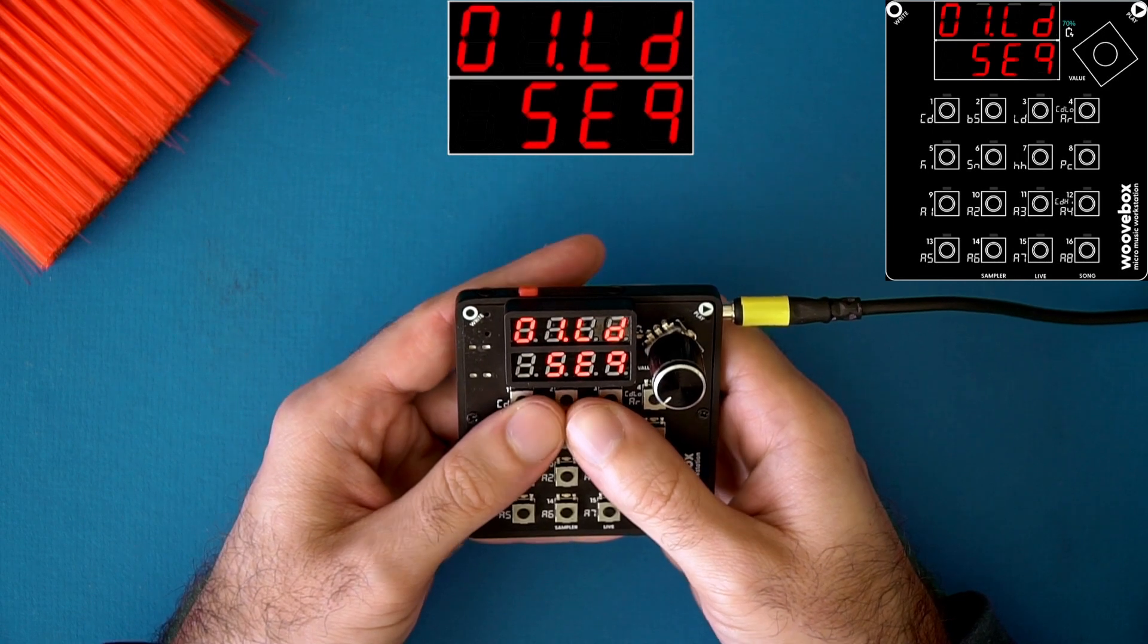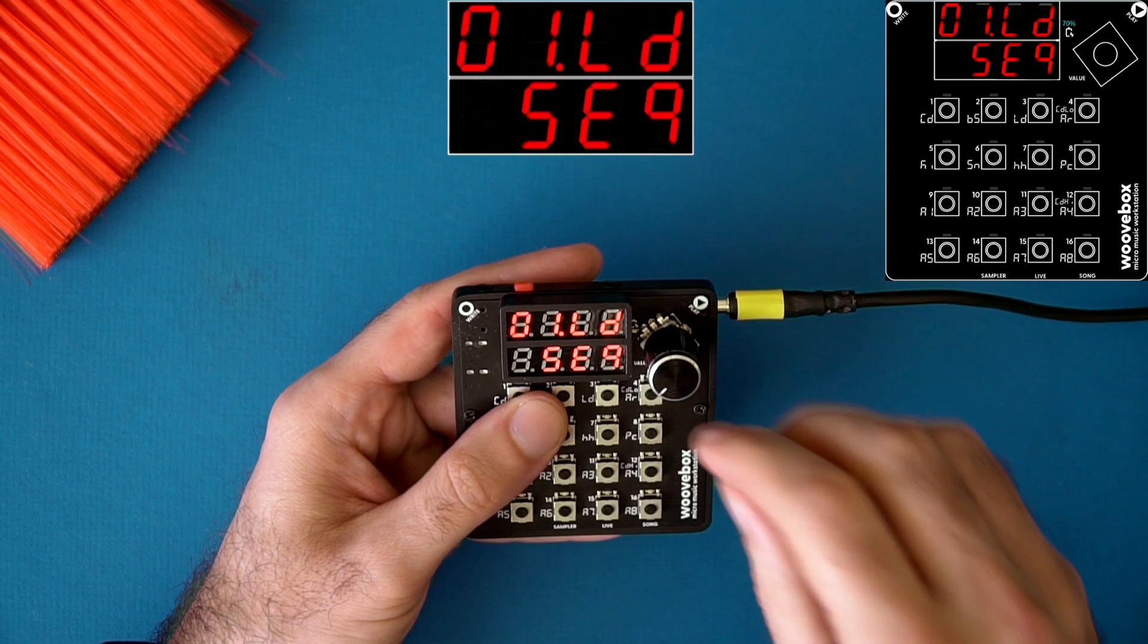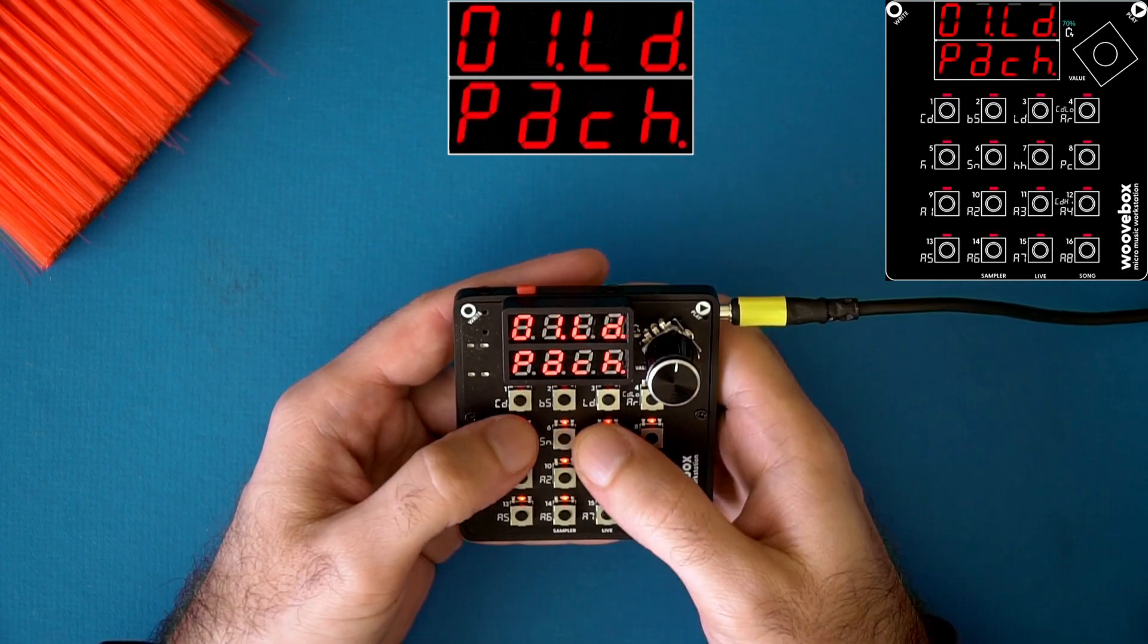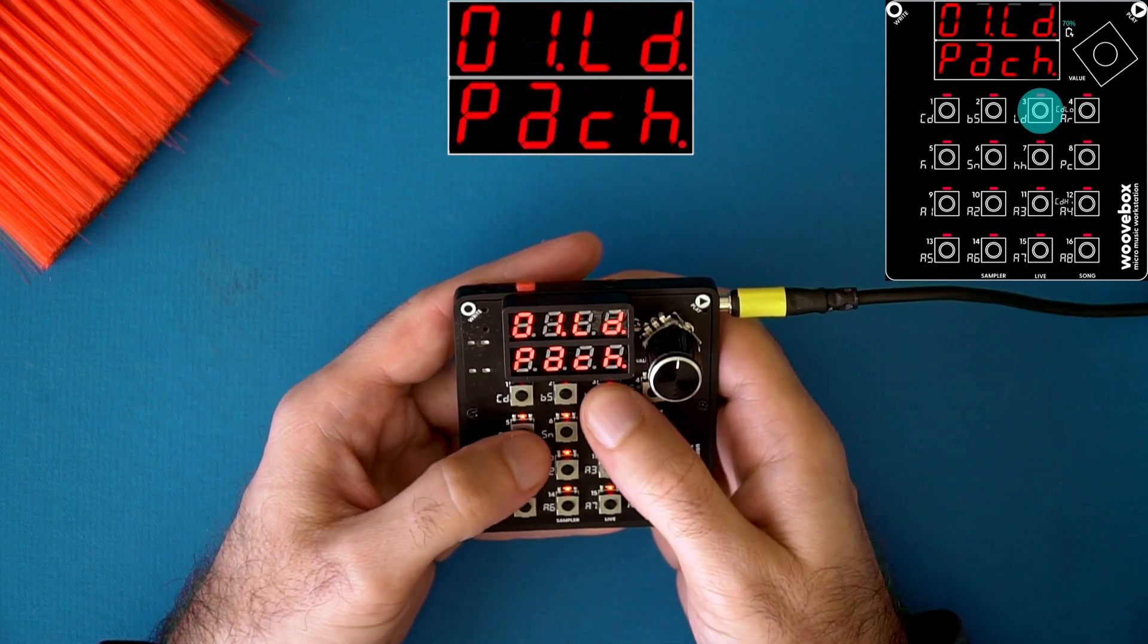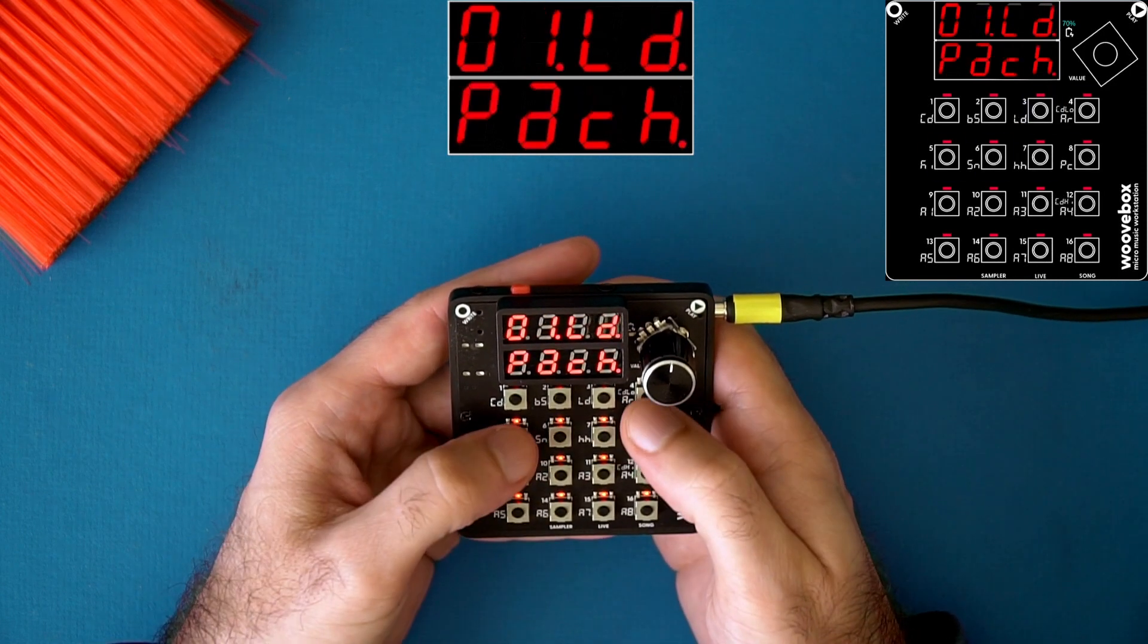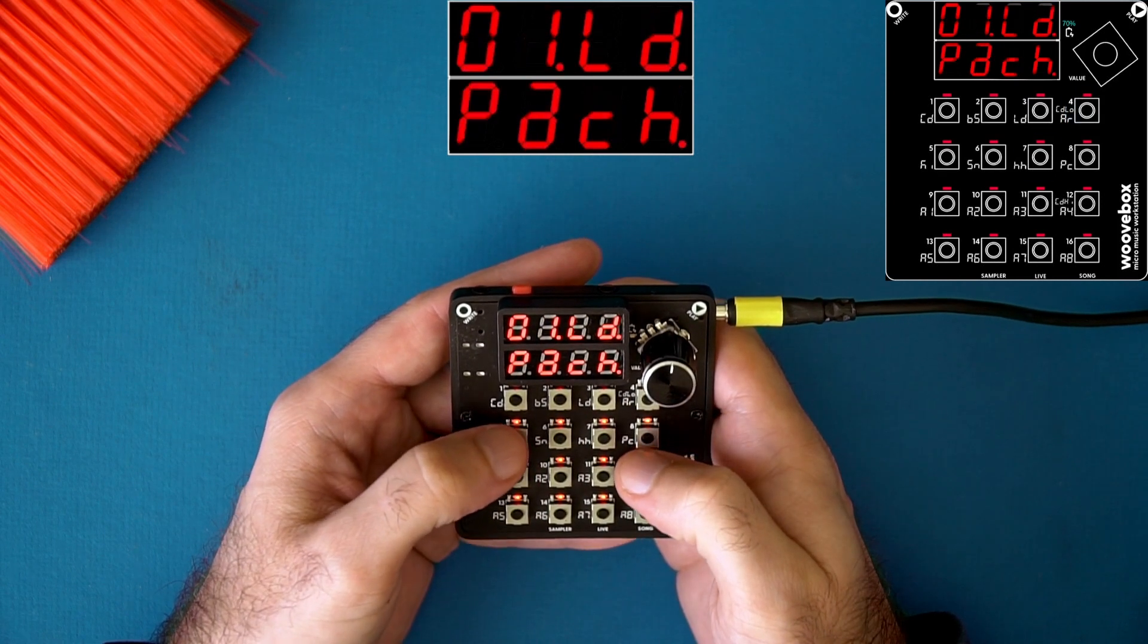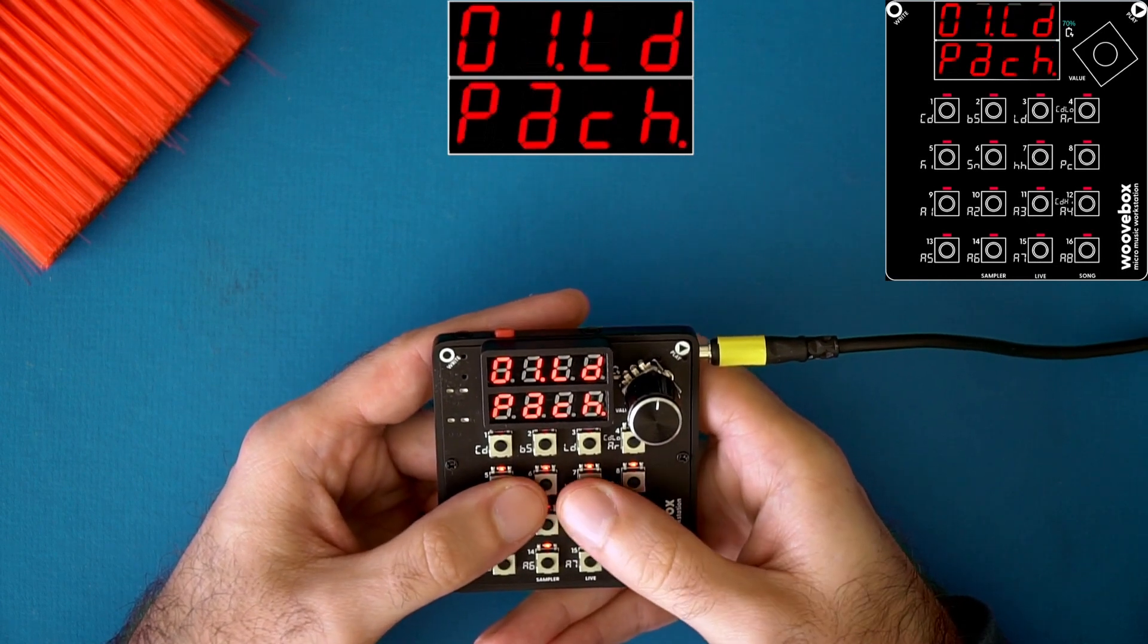And last but not least, tip 10 is how to change patches and patch types. So from the sequencer page, turn the encoder all the way to the right until it says patch. And then you can hold down any keys that are lit, except for 16, to select a different patch. 16 will revert to the patch that you had selected when you entered the patch page.